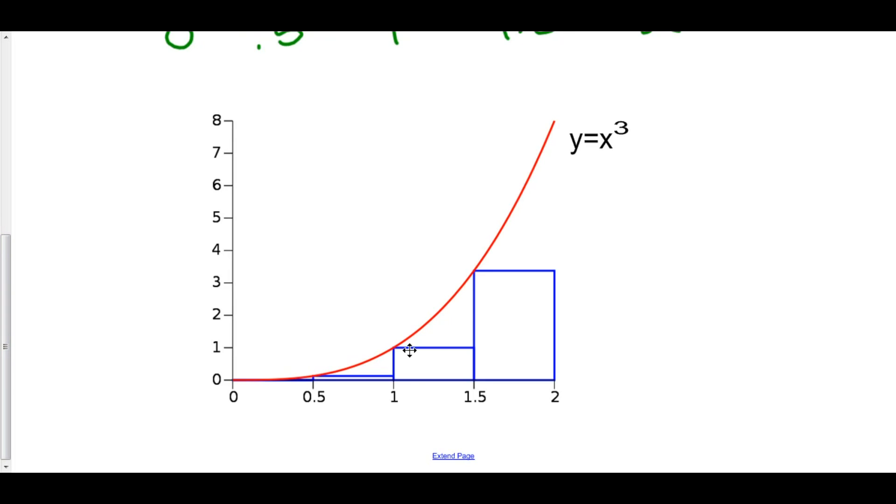Finally, 1.5 is 3 halves. 3 halves cubed is 27 over 8, so the function value here is about 27 over 8. That's a bit more than 3, is exactly what we have right here, and that's my last rectangle.